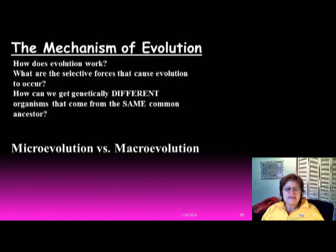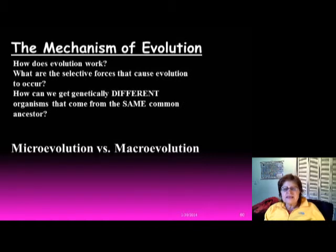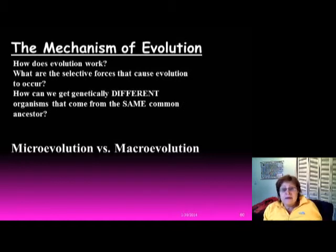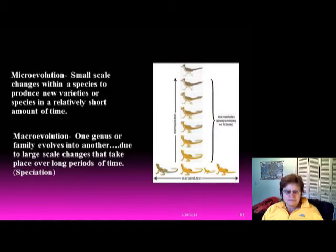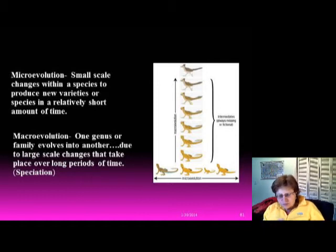Now we'll talk about the mechanisms of evolution — the selective forces that cause evolution to occur and how genetically different organisms can come from the same common ancestor. We'll cover micro versus macro evolution. Micro evolution refers to small-scale changes within a species that produce new varieties in a relatively short amount of time.